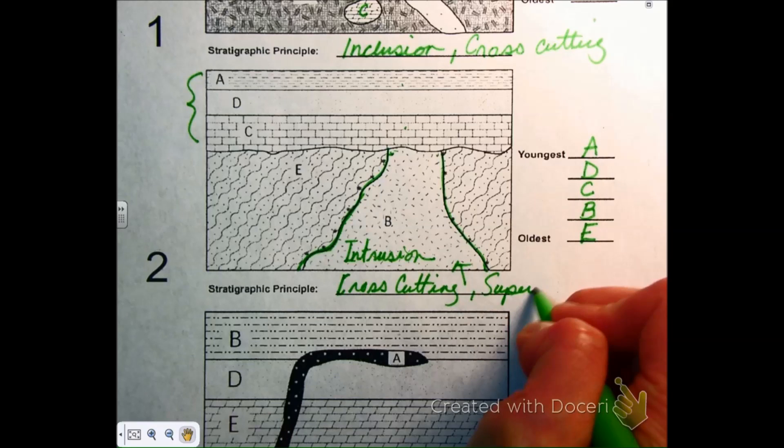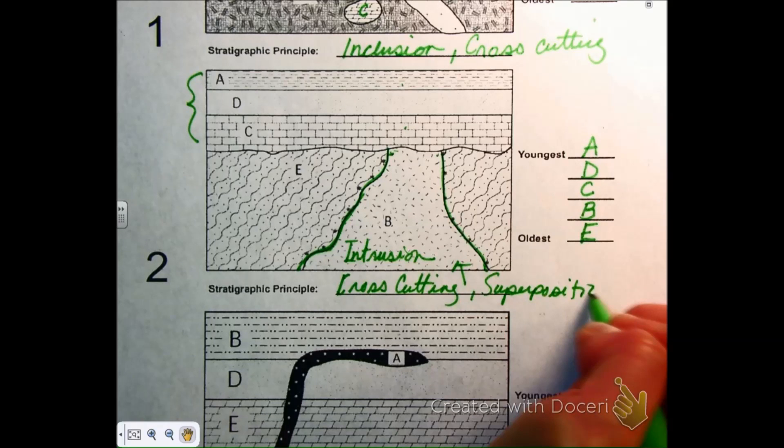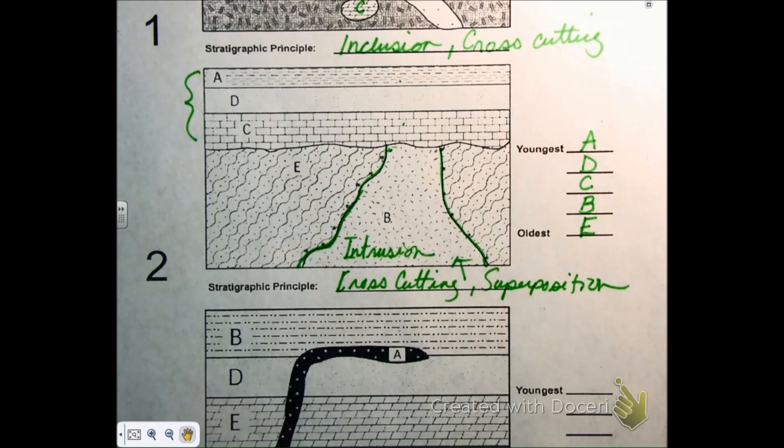So in this case, we used cross-cutting with our intrusion. And we also used superposition. Now, before you move on, there's a few clarifications that will help you as you work on your own. And then we'll discuss in groups.